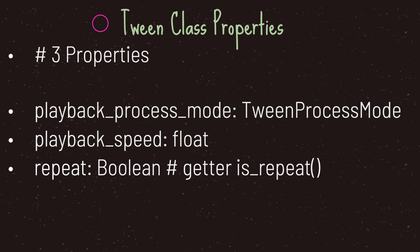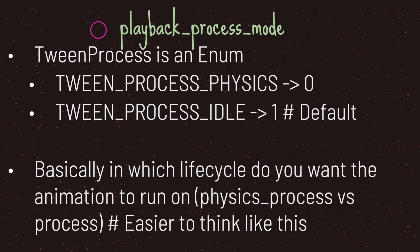The tween class comes with three properties: the playback process mode, which is an enum; the playback speed, which is a float value; and the repeat property, which is a boolean. The playback process mode is an enum of type tween process with two values — zero and one — representing physics step or the idle step, which is set by default.